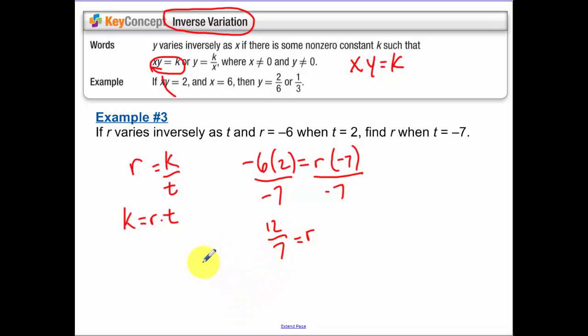So that's really using the second method. I didn't even find my constant of variation. If I wanted to find my constant of variation, I would have plugged in negative 6 times 2, k equals negative 12. So our general formula is negative 12 equals r times t, or you could look at it as r equals negative 12 over t.